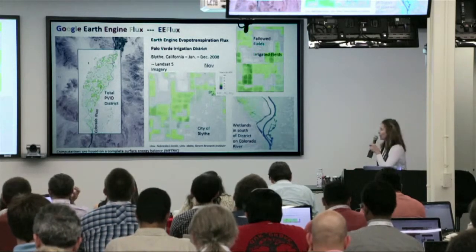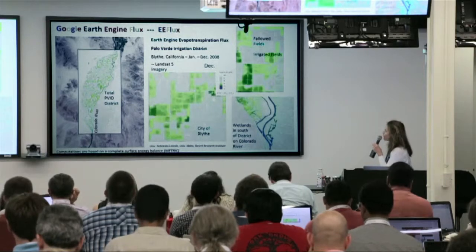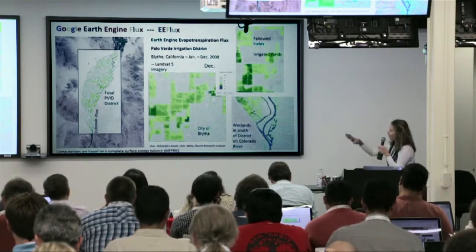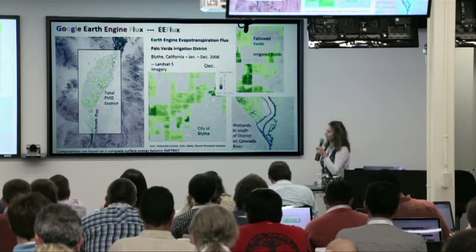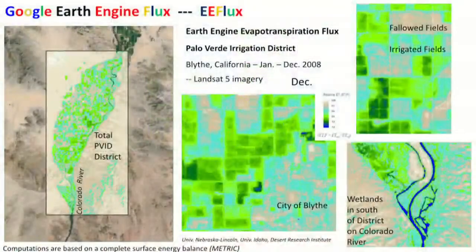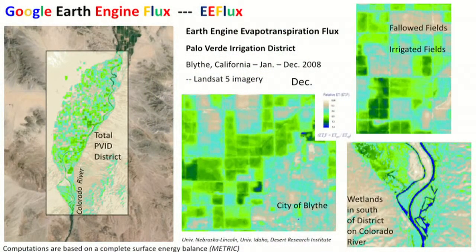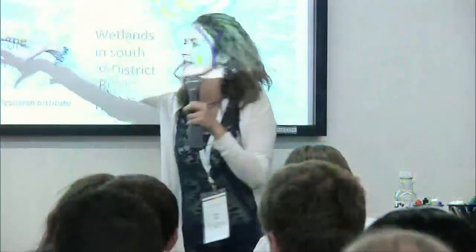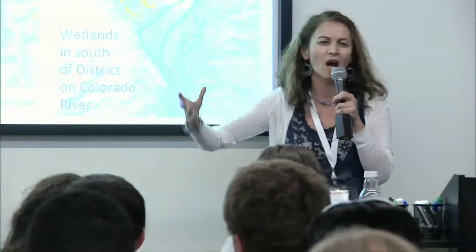Here's just showing the ET map for the Palo Verde Irrigation District. The darker the green means higher ET — this is a fraction of reference ET, meaning the plants are transpiring almost at their potential rate. The tan colors indicate bone dry conditions — there is no ET.